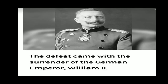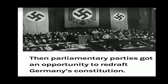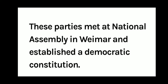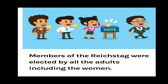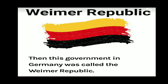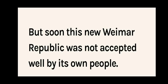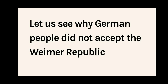The defeat came with the surrender of the German Emperor William II. Parliamentary parties then got an opportunity to redraft the German constitution. These parties met at the National Assembly in Weimar and established a democratic constitution. Parliamentary parties also set up the German parliament called the Reichstag, whose members were elected by all adults, including women. This government in Germany was called the Weimar Republic. But soon, this new Weimar Republic was not accepted well by its own people.